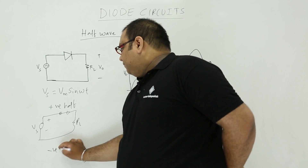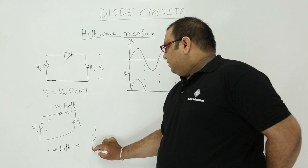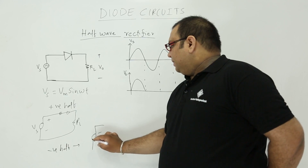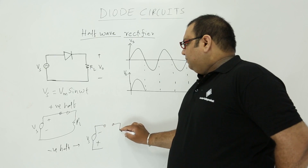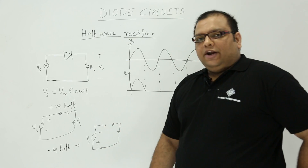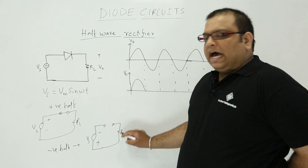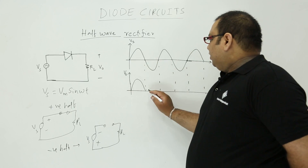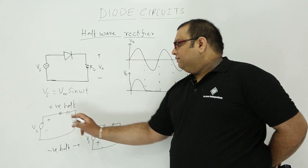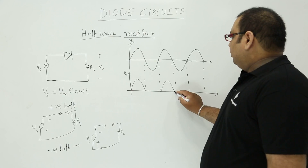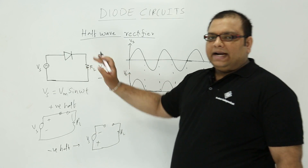During the negative half, the diode will act as an open circuit. So there is no connection, and the voltage across RL will be 0 — that means V0 will be 0. During the positive half, the diode is conducting and the same voltage appears across RL; again during the negative half it will be 0. So this is the output waveform at RL.